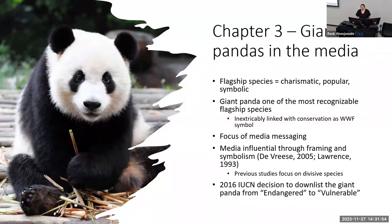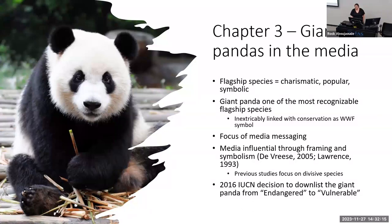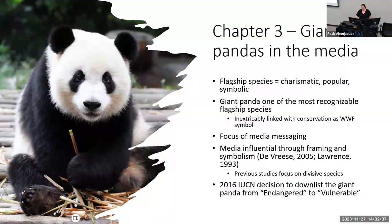As a flagship species, panda protection also protects the broader area and other species. Attitudes toward the general protection of pandas are important for understanding conservation motives. A really good temporal point to study was the 2016 IUCN decision to downlist the giant panda from endangered to vulnerable, giving a specific point in time to look at media before and after to see if there was a shift following such a significant conservation event.